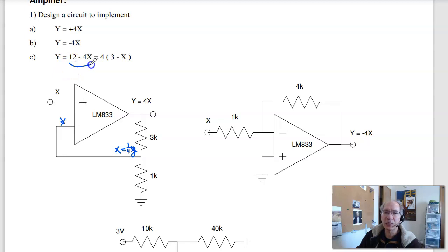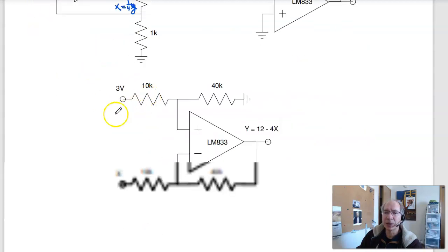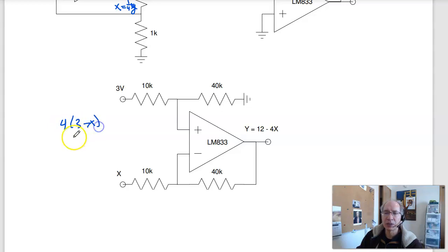The third one is to make a gain of 12 minus 4x. That's an instrumentation amplifier. I can rewrite this as 4 times 3 minus x. So that'd be this circuit. That's equal to 4, or r1 over r2, times a minus b. So that's 4 times 3 minus x. That tells you right away, this is a, this is b. a equals 3, b equals x. The gain is 4, so pick this to be a 4 to 1 ratio.